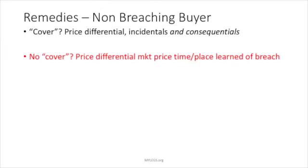Now let's talk about remedies for a non-breaching buyer. If the buyer doesn't get the goods, the buyer can buy from somebody else — we call that cover. If a buyer covers at a higher price, the buyer gets that price differential together with incidental damages and consequentials. Buyers do get consequential damages under Article 2 of the UCC and state adoptions, including Florida's. The non-breaching buyer's right to damages is covered in UCC 2-711 through 2-713.